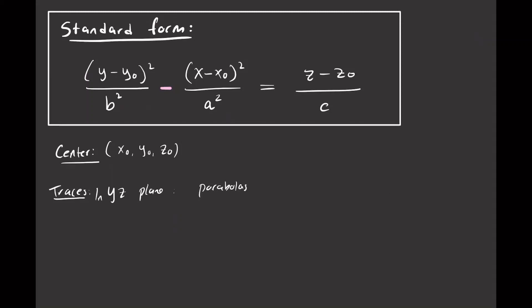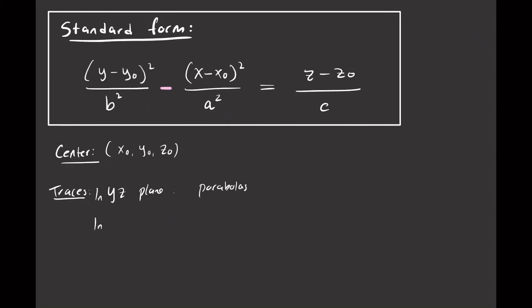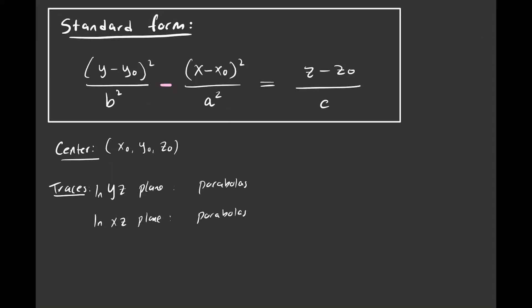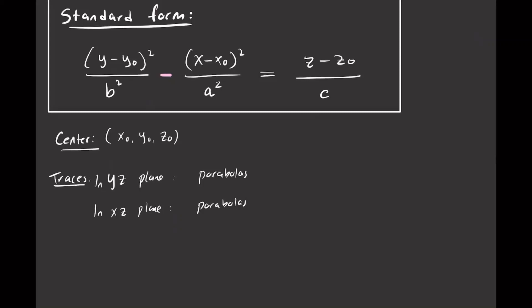Similarly, if you ignore Y, then you'll have another parabola, but it's facing down because of that negative. So in the X,Z plane, the traces are also parabolas. And now if you let Z be a constant, then you'll have an equation equal to a constant, which is an equation of a hyperbola. So in the X,Y plane, we have hyperbolas.